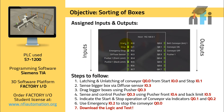We are using pusher one front limit at I0.4 and back limit at I0.5. So we have three sensors and three buttons. On the output side, we have the belt conveyor at Q0.0, a conveyor on indicator, a conveyor off indicator, and the pusher. The green indicator shows the conveyor is on, red shows it's off, and the pusher moves front and backward. These are all the assigned inputs and outputs.